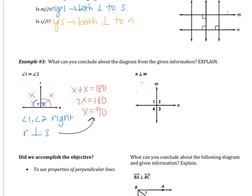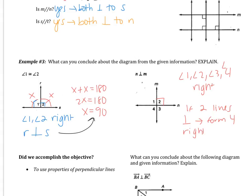Pause the video and try the second part of example three. [After pause] It says N is perpendicular to M. Perpendicular means that we form a right angle, so right off the bat that should have told you that angles one, two, three, and four are all right — based on the theorem that if two lines are perpendicular, they form four right angles. You also could say that angle one is congruent to angle two, which is congruent to angle three, which is congruent to angle four. But really, the key conclusion is that all those angles are right.